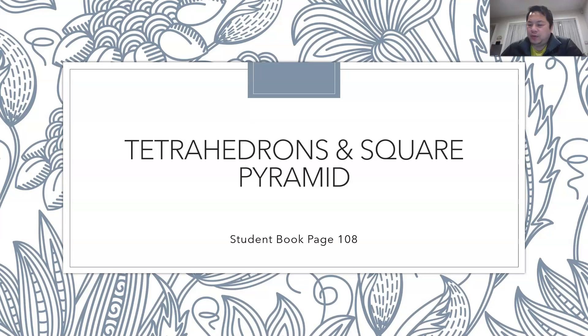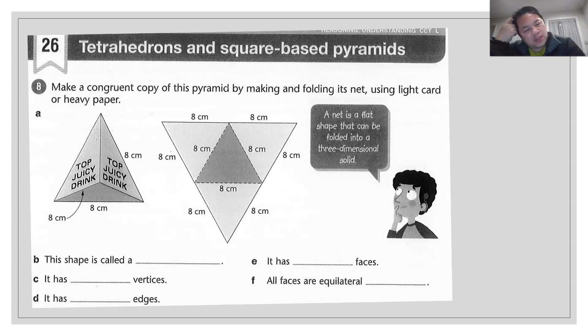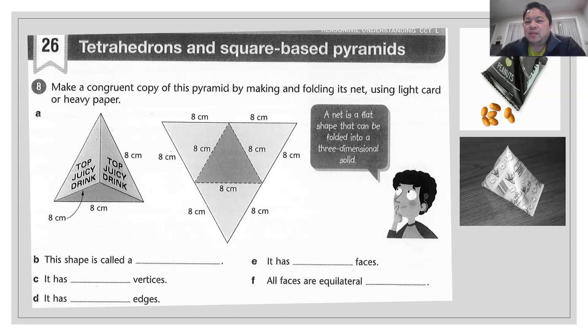We're going to touch a little bit on 3D shapes, tetrahedrons, as well as square pyramids. Two of them have some similarity. And towards the end of the lesson, you need to do some research to find out what are the similarities between the two 3D shapes. The first one given is a tetrahedron. I've given you two examples here. So like this peanut package and this milk packet. These are all tetrahedron shaped. I'm sure you can still find some of them available in the supermarket.